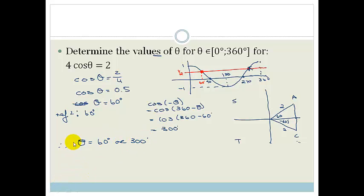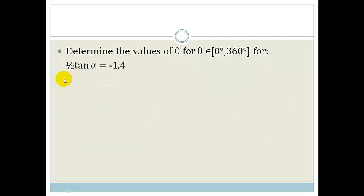Okay, not too bad here. Let's do another example. The first thing we're going to do is solve for tan alpha. So we go tan alpha is negative 1.4 divided by a half. And what do we do when we divide by a fraction? We tip and times. So we've got tan alpha is equal to negative 1.4 times by 2, which is negative 2.8.